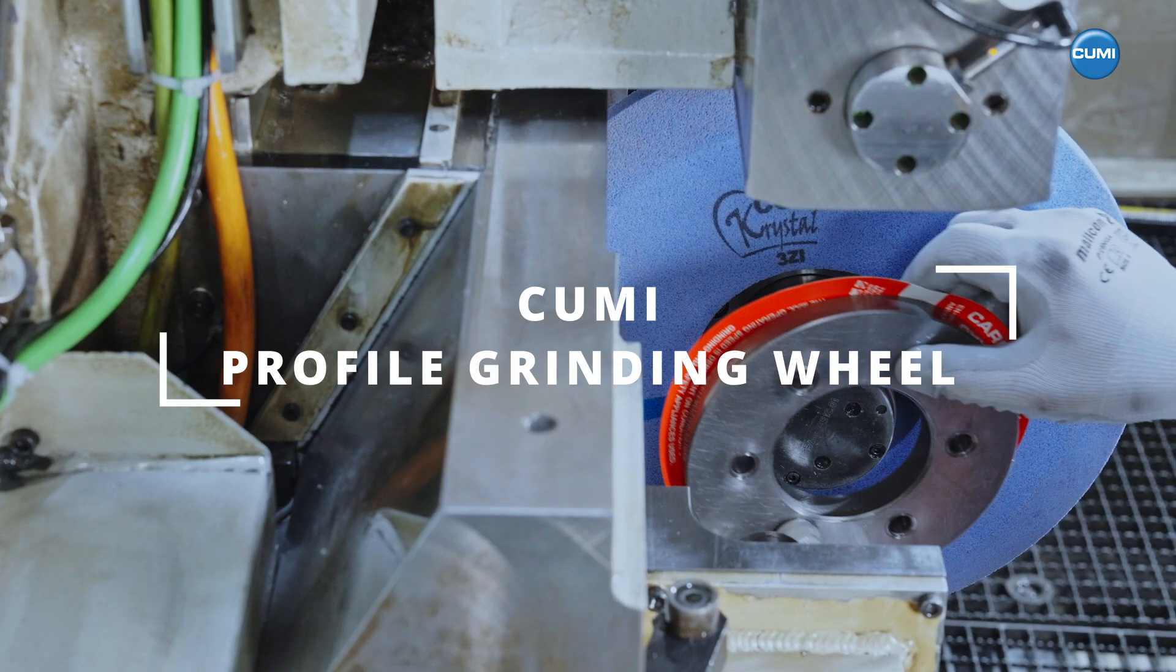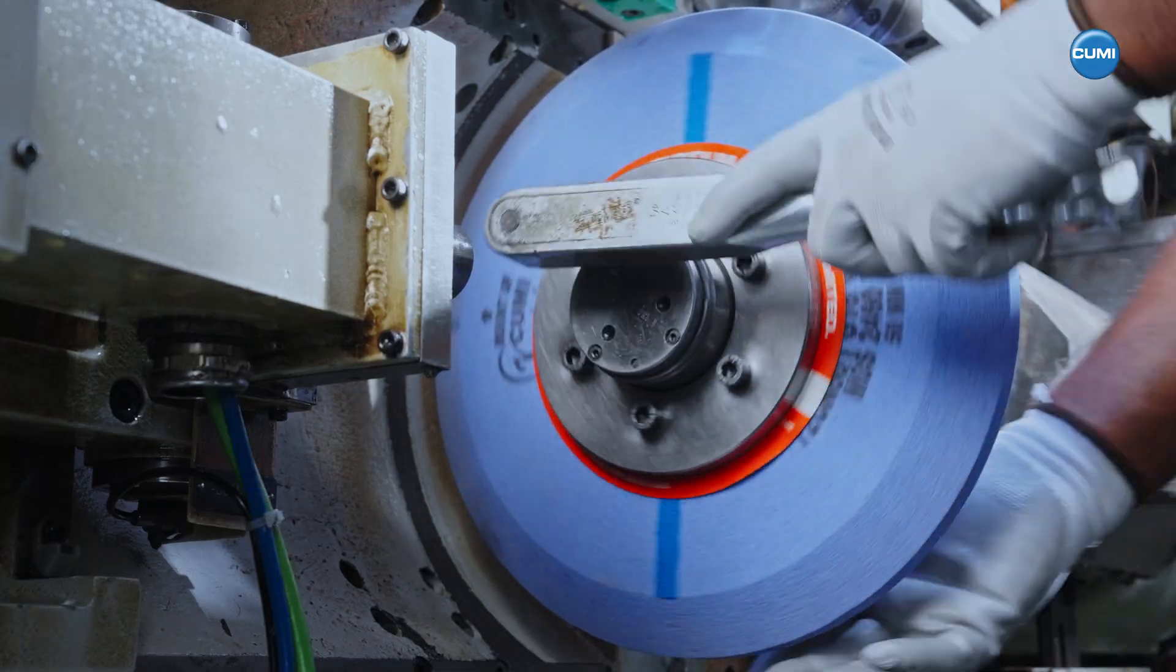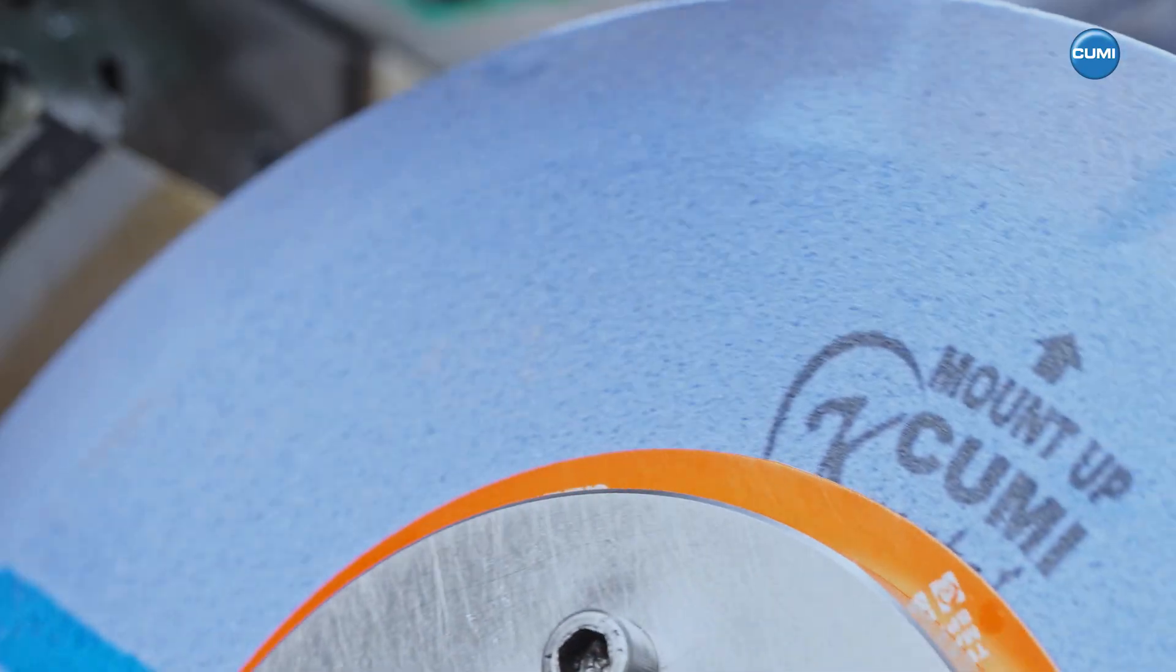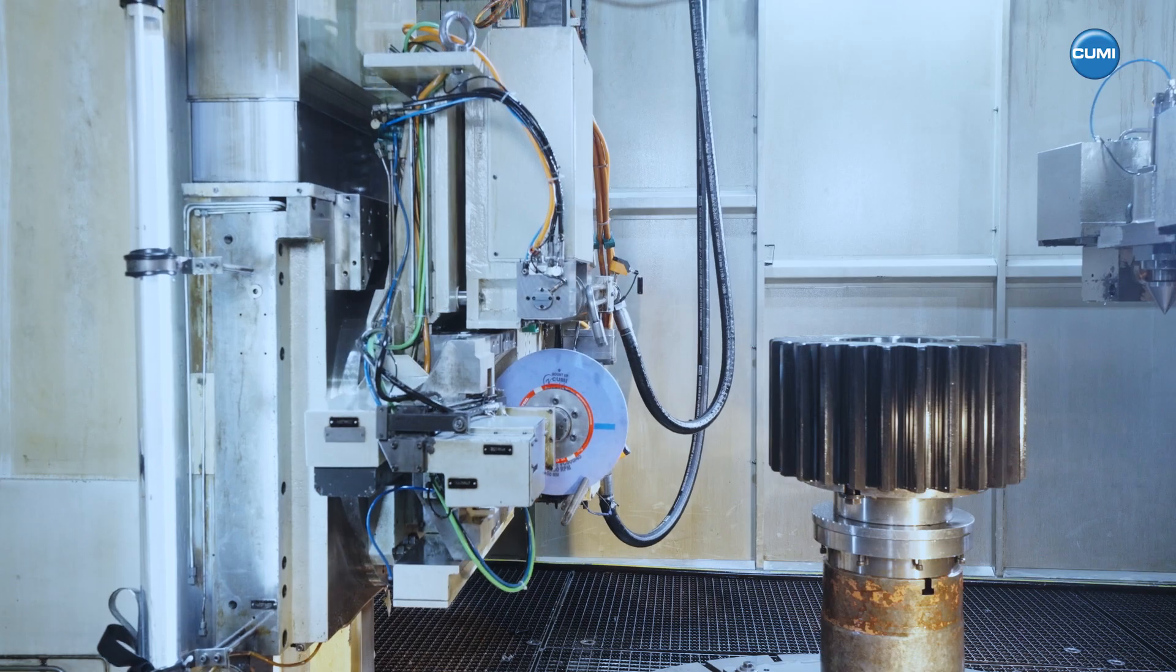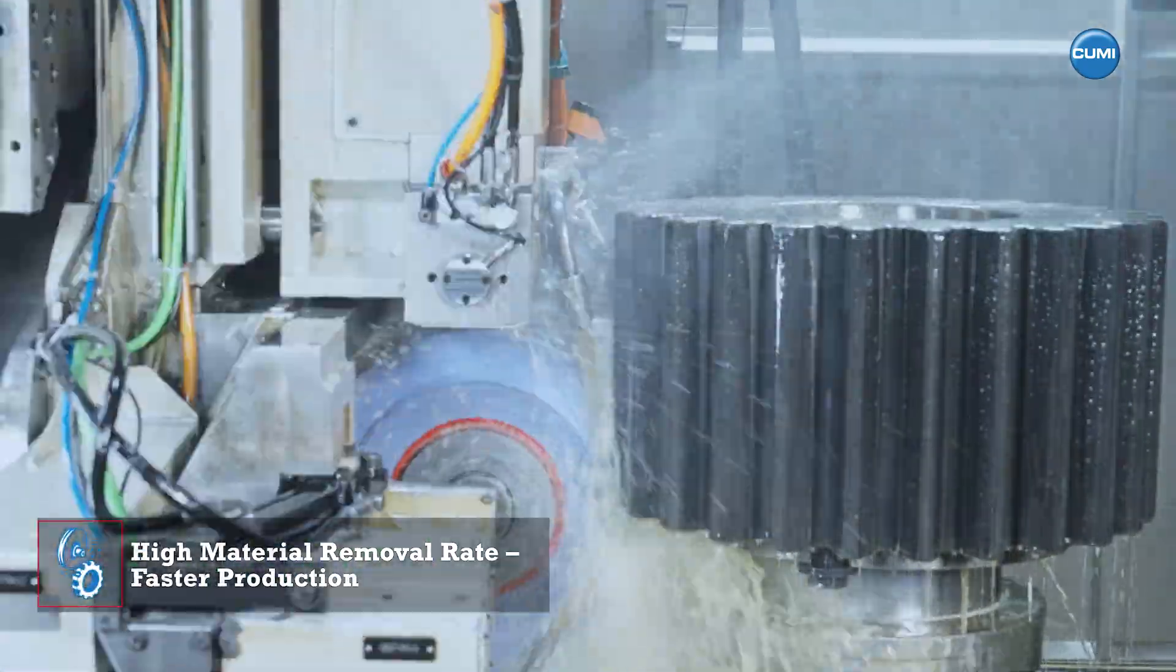CUME Profile Grinding wheels are designed for high-precision profile grinding, ensuring superior gear quality. Empowered by a high-force resin bond, these wheels achieve high material removal rates, enabling faster production.